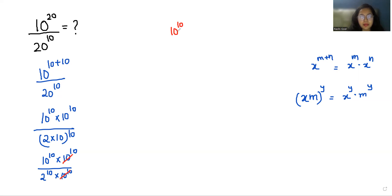So what is left? 10 power 10 by 2 power 10. Using another exponent rule, x power m by y power m equals x by y whole power m. So 10 by 2 whole power 10. We cancel this as 5, so it becomes 5 power 10.